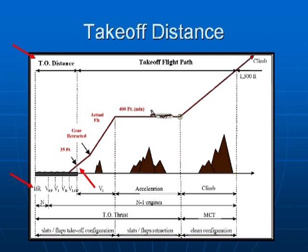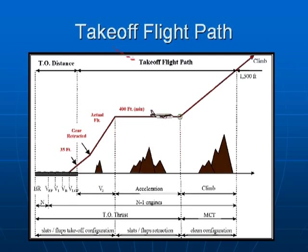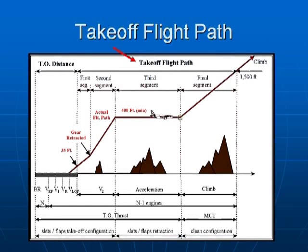This data is then used to formulate the field length charts or field length graphs contained in the AFM. Next, we have the takeoff flight path which is broken into four segments: the first, second, third and final segments.